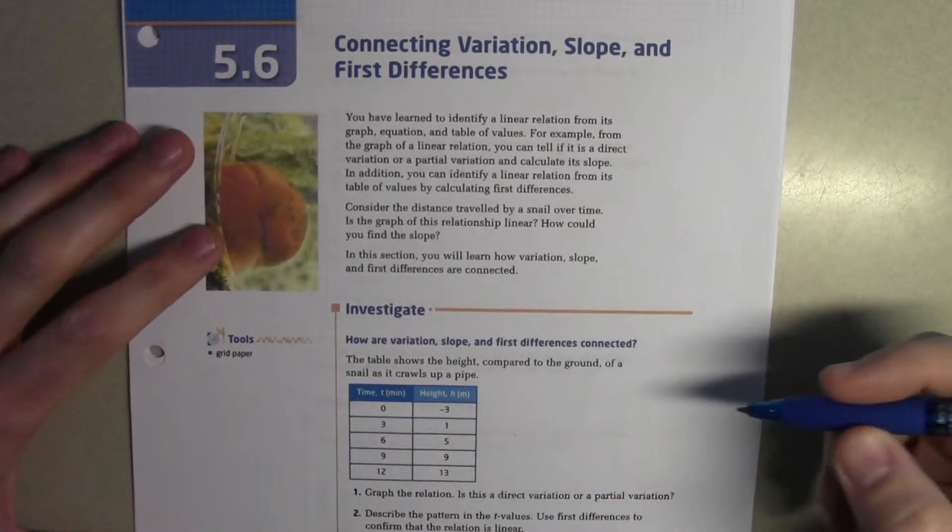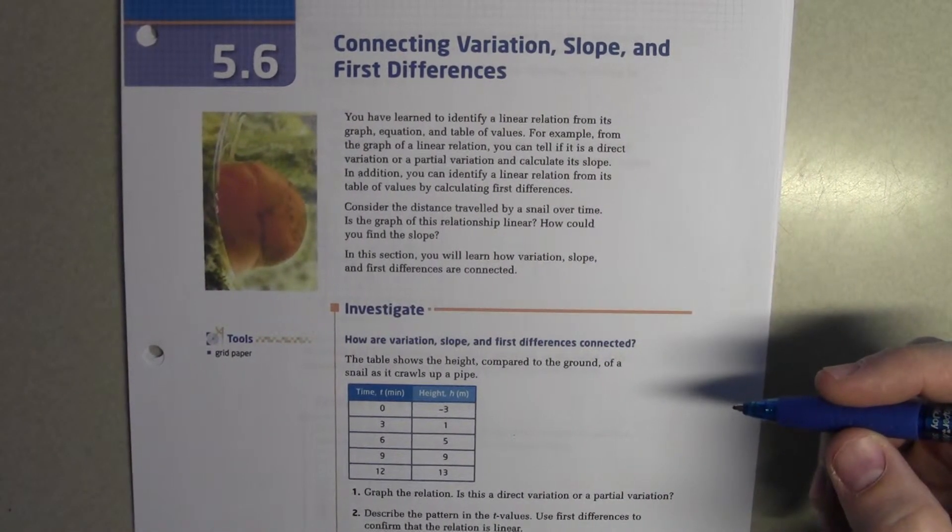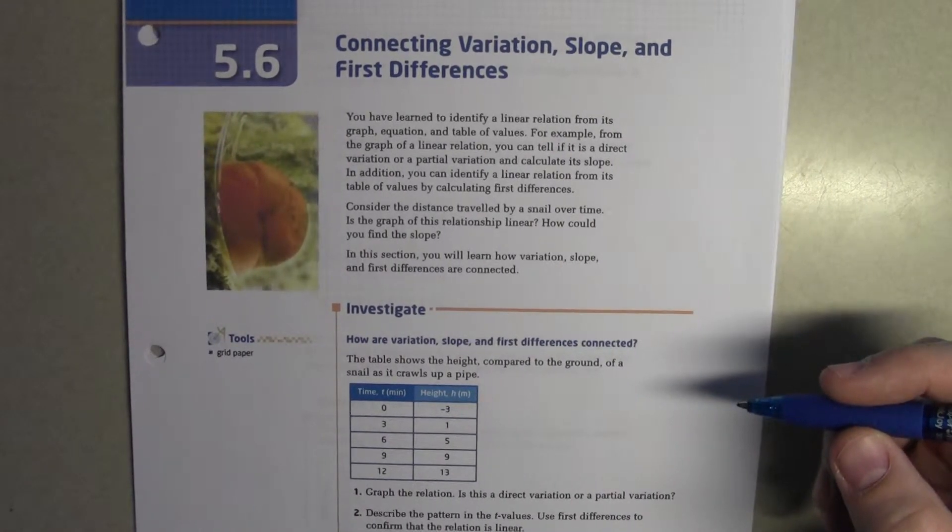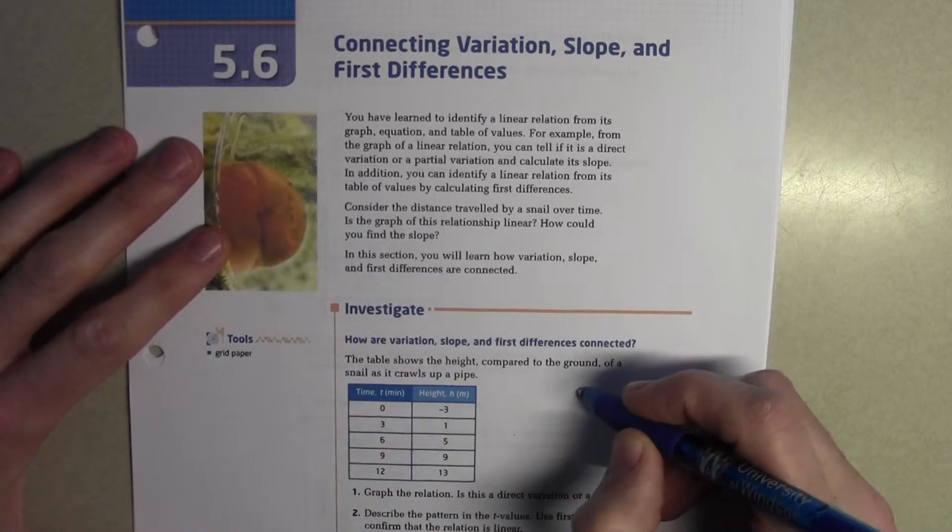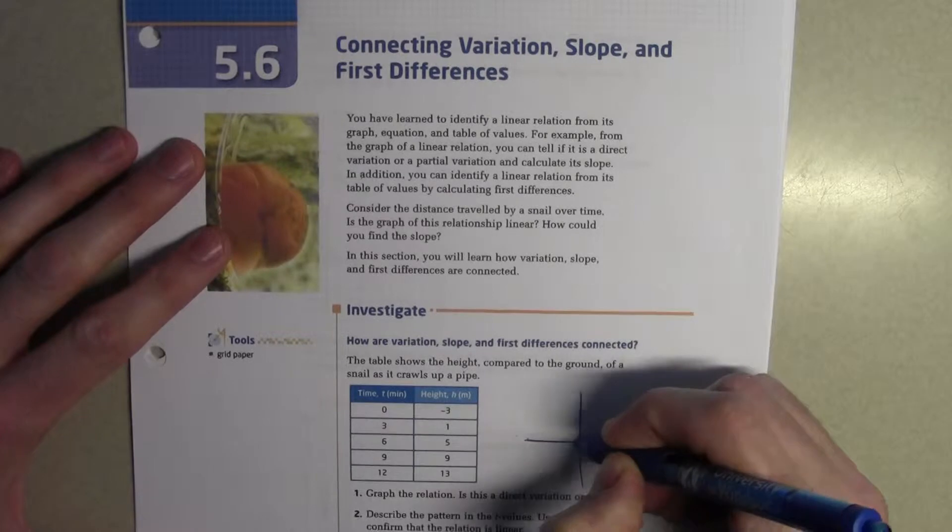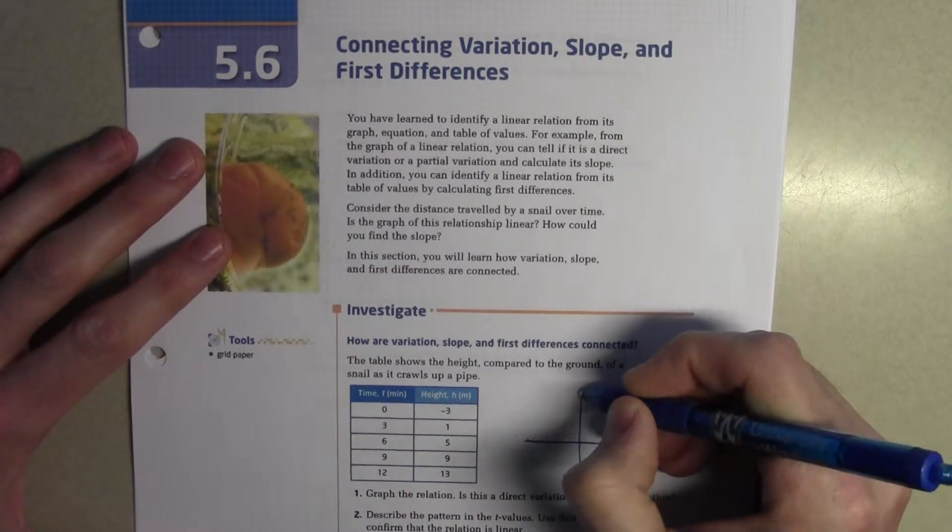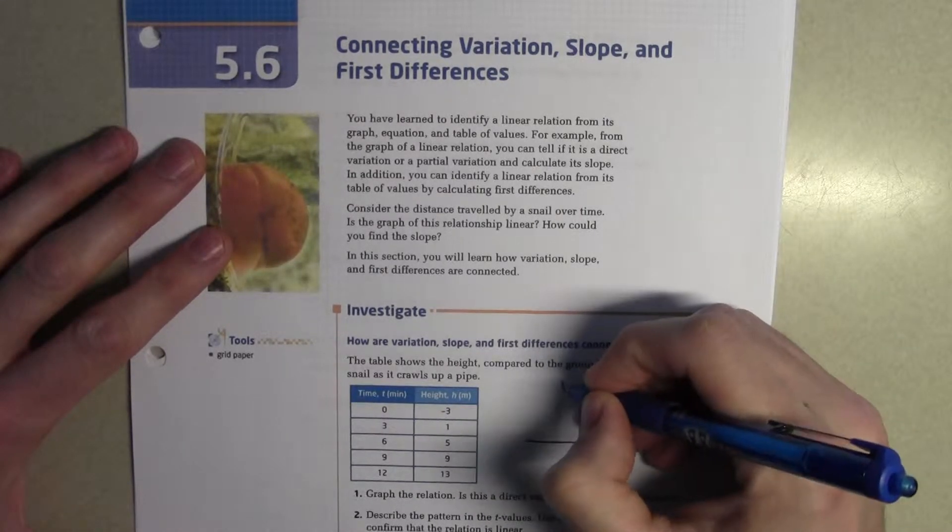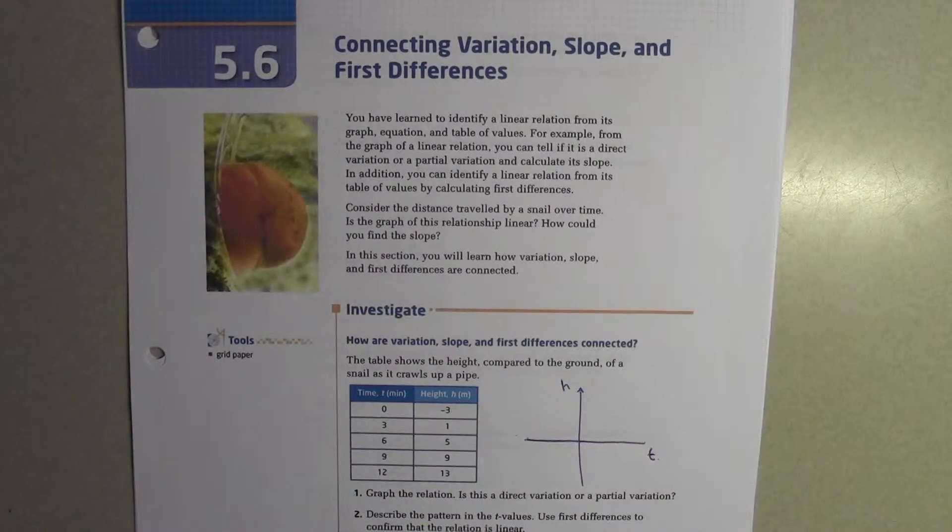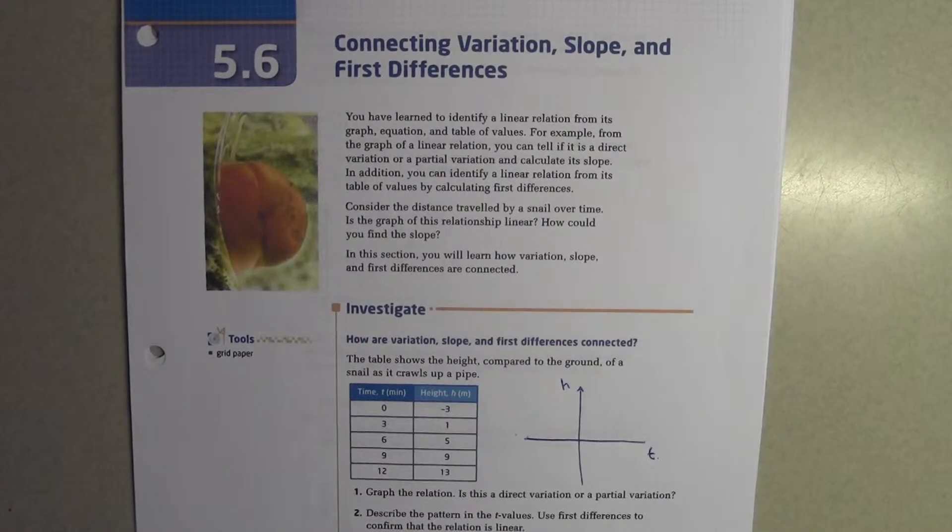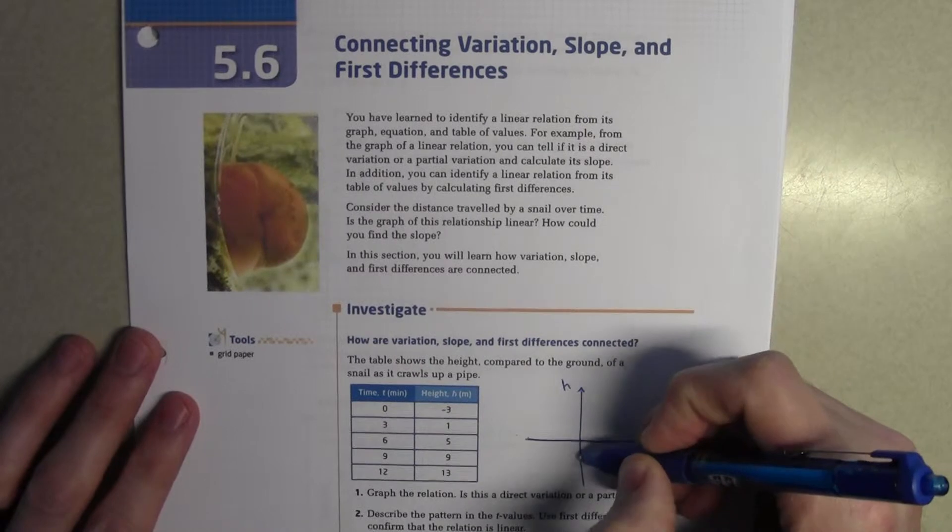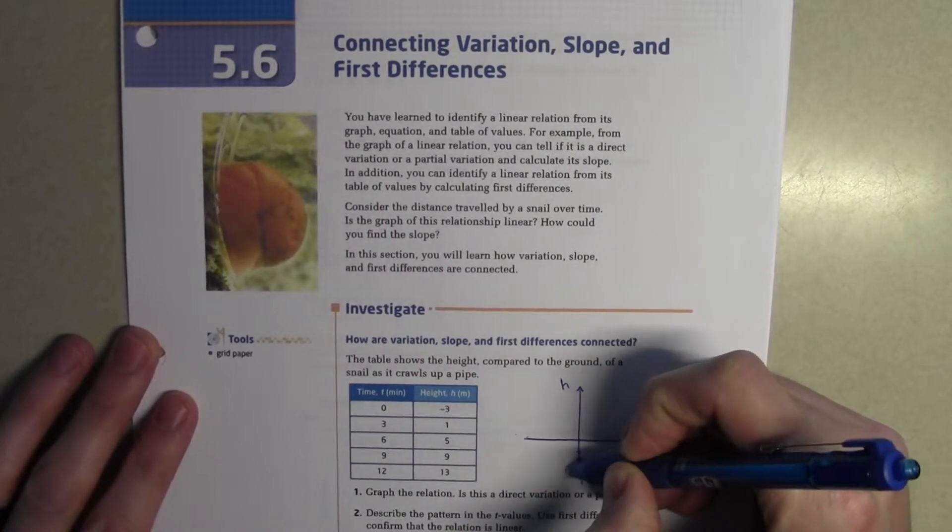So, can anybody tell right away by looking at the graph if it's direct or partial? Mark? Partial variation. Why? Because the time and the height are going to be different numbers. Oh, they're always going to be different numbers. They have to match. They have to match on what value? You're right. I know what you mean, but on what? On zero. Right. So, when time is zero, height has to be zero for it to be direct variation. But in this case, at zero time, we have a height of negative three.